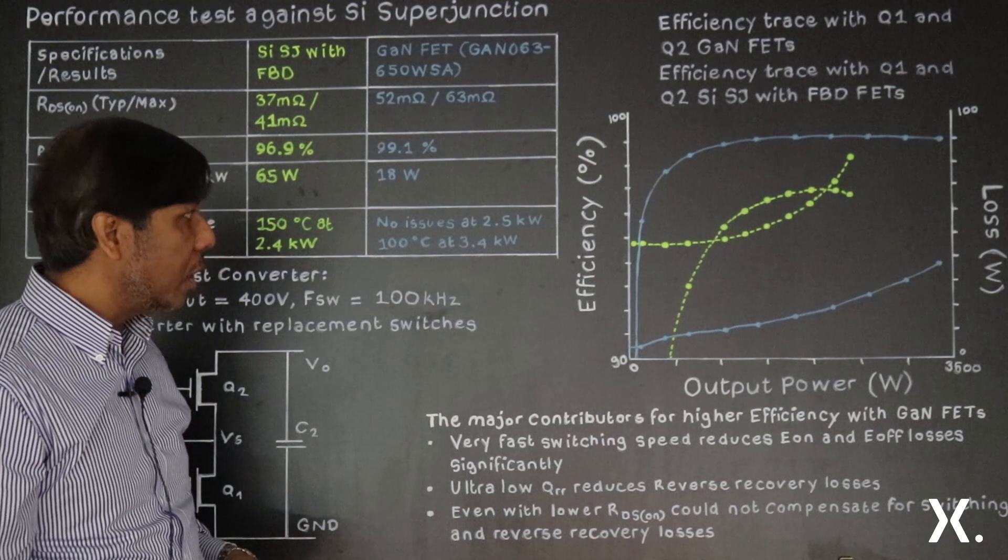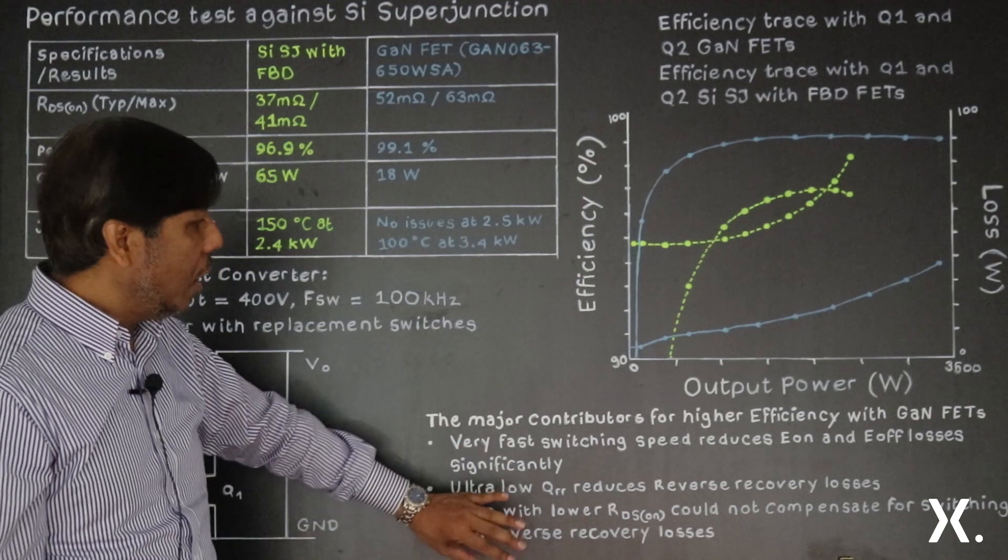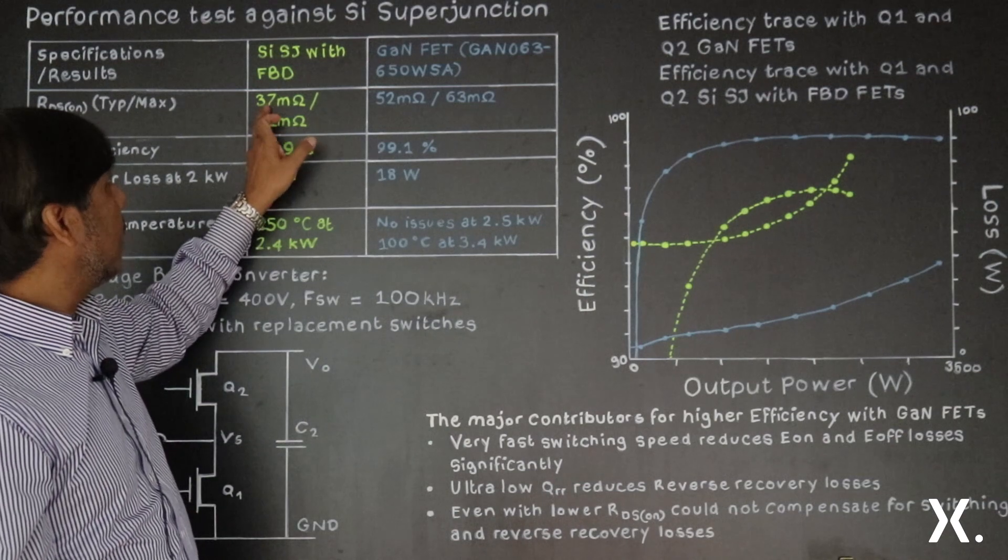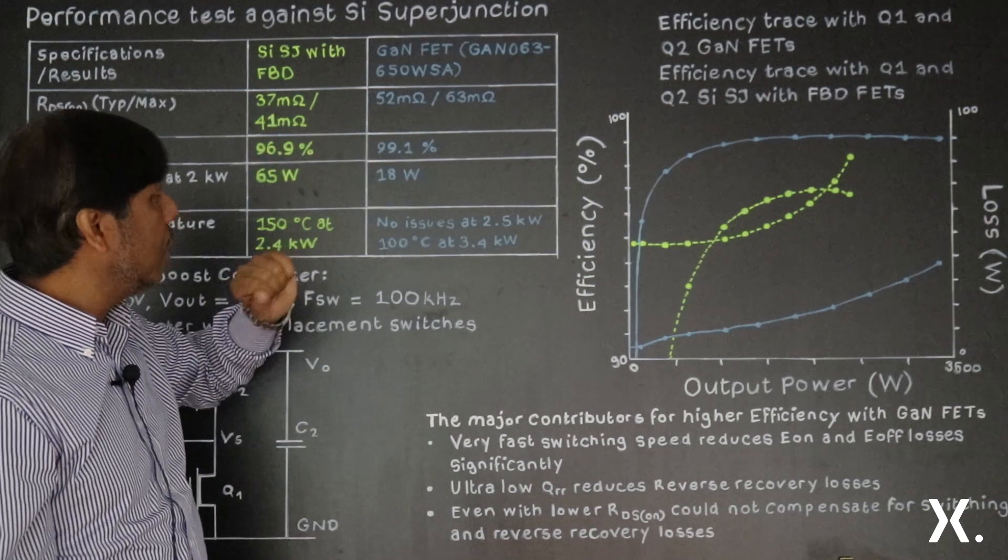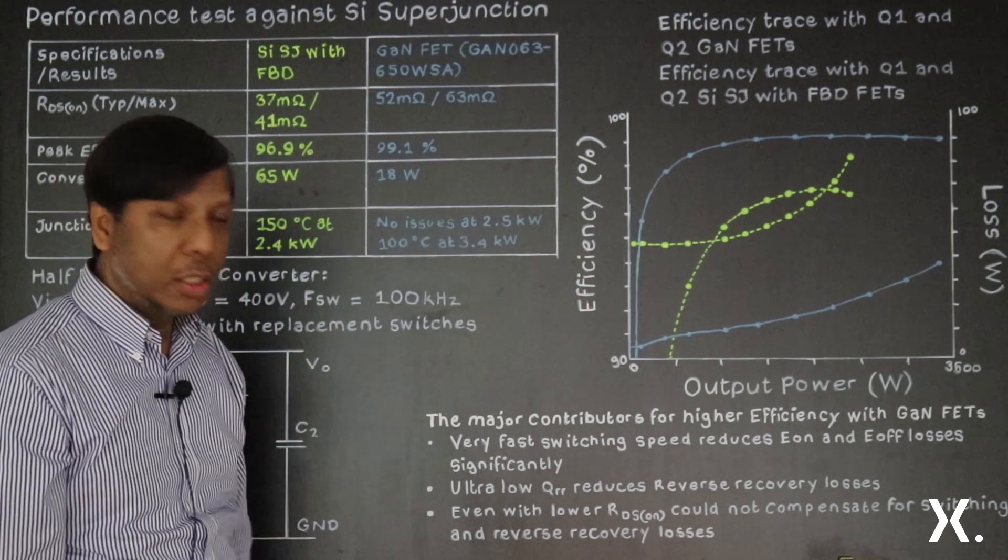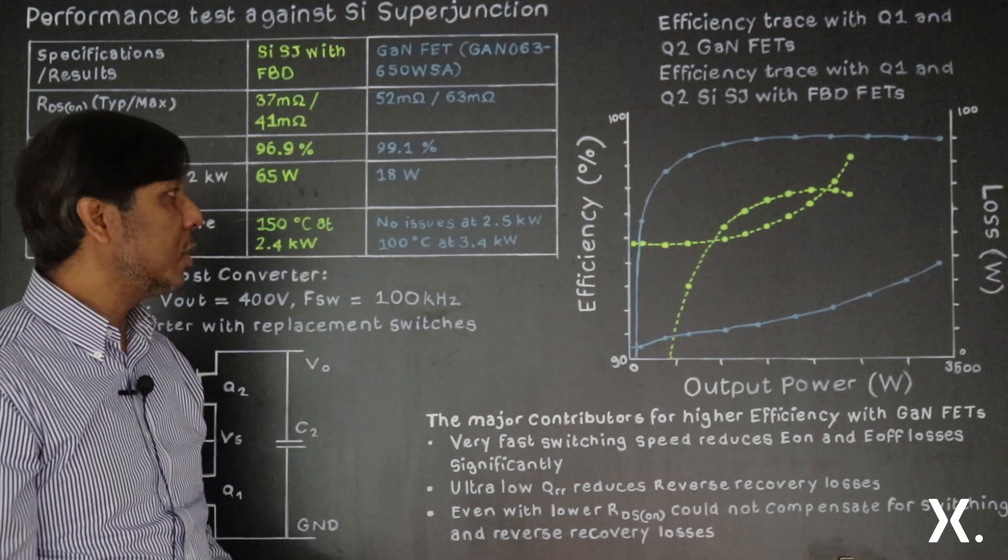Even with the lower RDS on, which is about 37 milliohms against 52 milliohms, we can see that silicon still couldn't compensate for these efficiency losses.